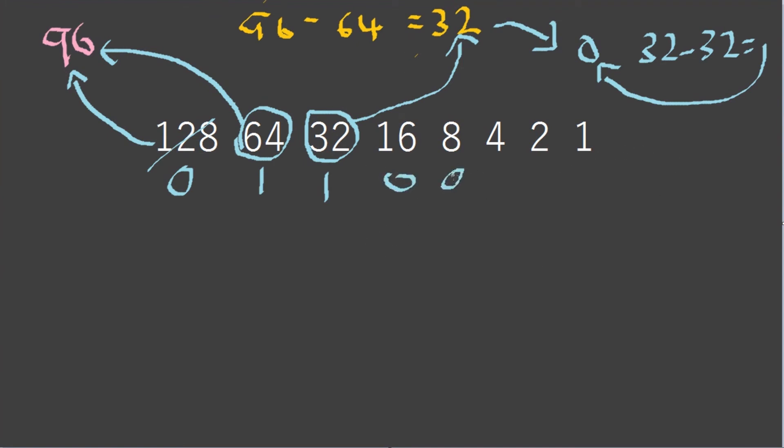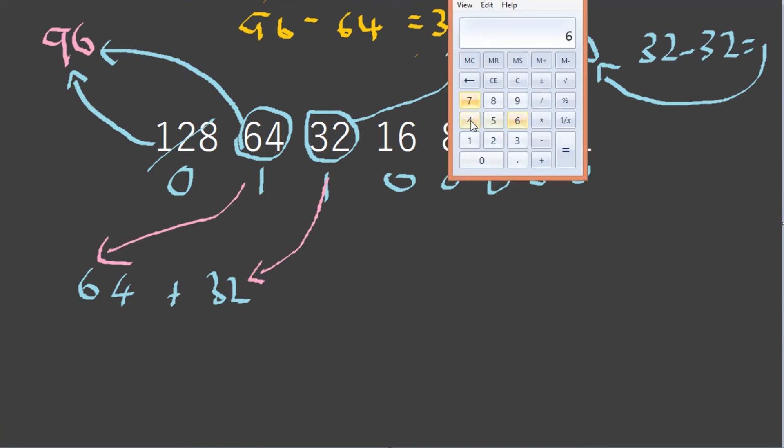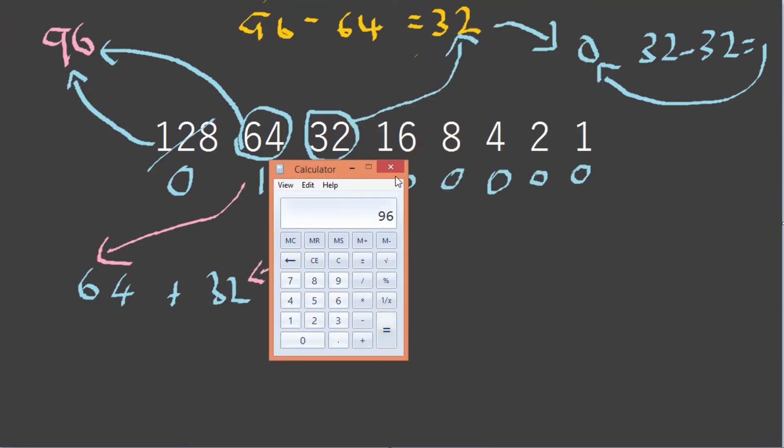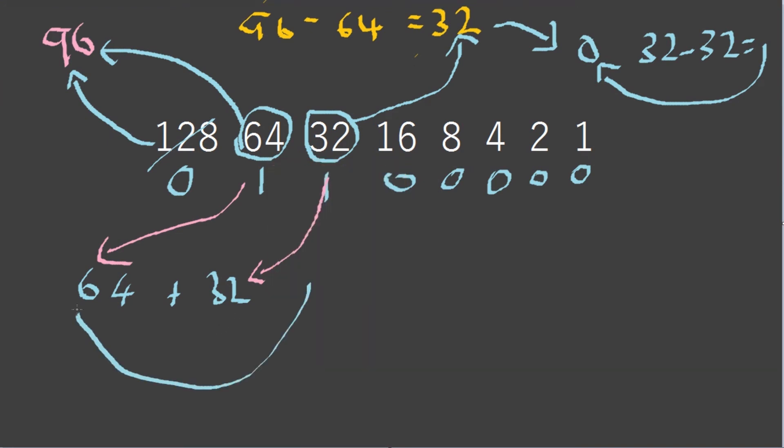We add zeros all the way through. We have one lot of 64 and one lot of 32. 64 plus 32 is equal to 96, and what is 96? It is our number we started from above.